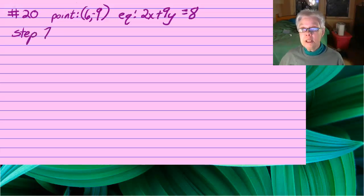Step one will be to use 2x plus 9y equals 8. Parallel lines have the same slope. So we're going to use the given line, find the slope of that line.